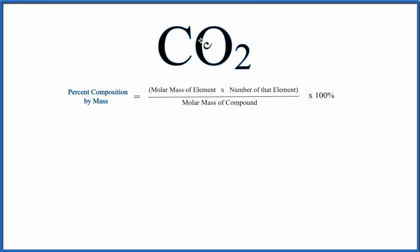To find the percent composition by mass for each element here in CO2, carbon dioxide, we first need to find the atomic mass of each element, and then the molar mass of the entire compound.